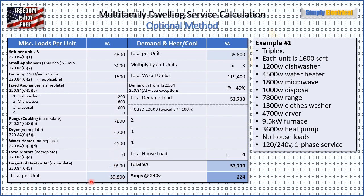Now we apply our demand factor from table 220.84. Three units gives us a demand factor of 45%. So 45% of 119,400 is 53,730 VA — that's our total demand load. We have no house loads, so 53,730 is our total VA. Divide by 240 volts single phase, and that gives us 224 amps. That is our service size.